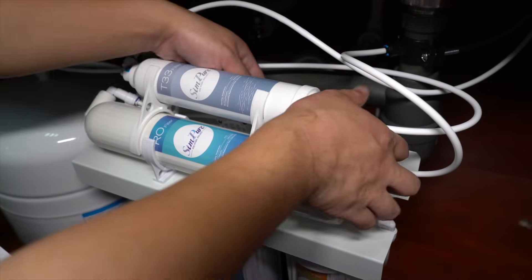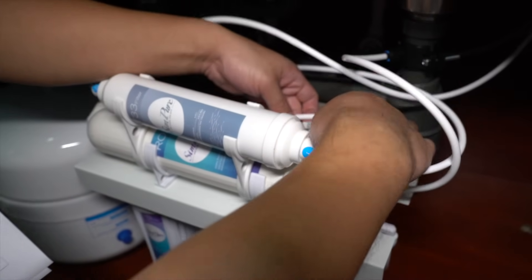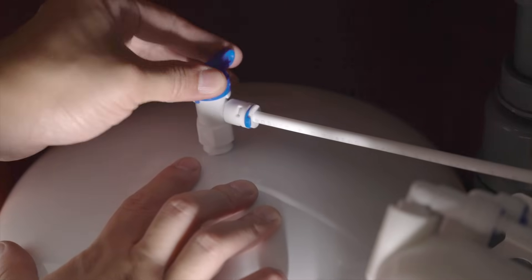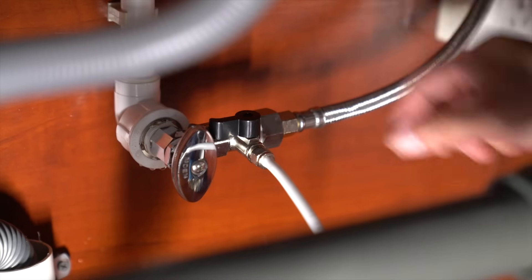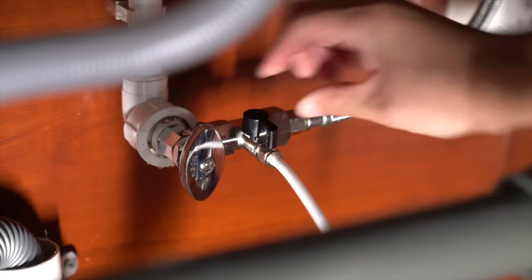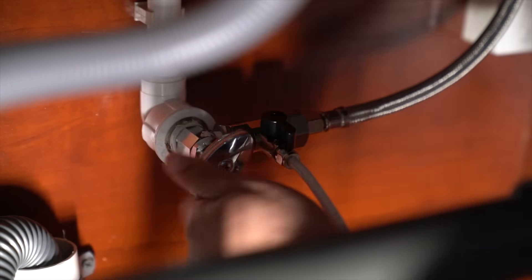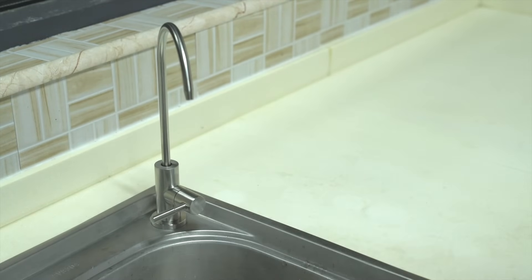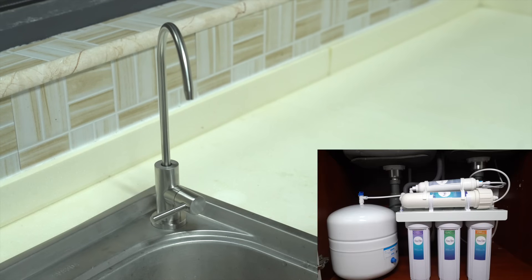Congratulations! You have completed the installation. The next stage is to commission and flush the system ready for use. Ensure the manual flush valve on the T1 central unit is closed. Close the pressure tank ball valve. Turn on the cold water shutoff valve and the feed water adapter. Open the faucet and allow the water to run to drain to rinse all components. During this time, review all connections and make sure there are no water leaks.